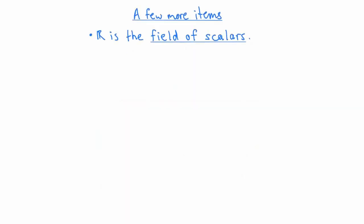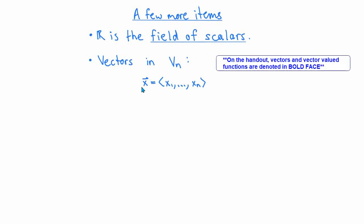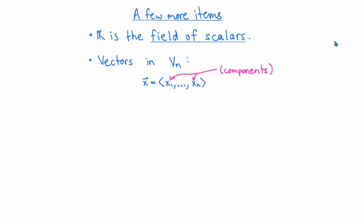Really quickly, I'll mention a few more items of basic notation and convention. First of all, in the context we're working in, the set of real numbers is called the field of scalars. Secondly, when I'm working with a vector x in vn, I'll use an arrowhead over it to emphasize the fact that it's a vector. One exception to this is on the vector calculus handout in the description. There I use boldface instead of arrowheads to denote vectors and vector functions and vector fields. The reason for that is purely typographical. Hopefully it doesn't cause any confusion.